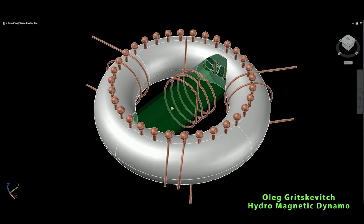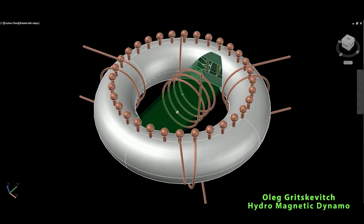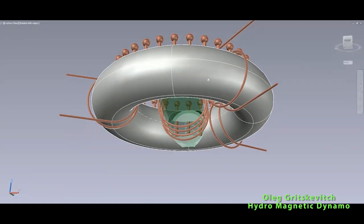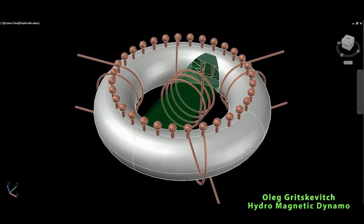Let's see what this is called. This is called the Oleg Gritskevich hydromagnetic dynamo or hydromagnetic generator. You can see this is some kind of a torus.